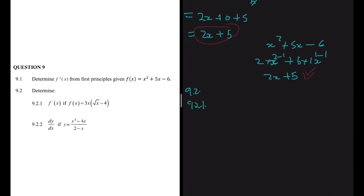So 9.2 here, let's determine f prime of x if f of x equals 3x multiplied by the square root of x minus 4. It's very hard to multiply with the square root, so it's better if we just write it as to the power 1 over 2. So f of x, we can write it as 3x multiplied by x to the power half minus 4.